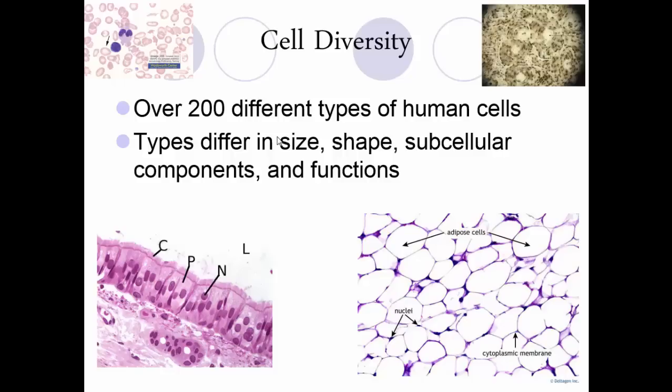Even among blood cells they're very different — the two purple cells look different from each other because they have different jobs. On the bottom left we have pseudostratified ciliated columnar epithelial cells — cells that have cilia on the outside, which are little hairs. They are pseudostratified, meaning they look like they're in layers; columnar, meaning column- or rectangular-shaped; and epithelial, meaning lining tissue. On the bottom right are adipose cells, which are fat cells — the nuclei are pushed to the side and most of the cell contains fat. On the top right are bone cells, which are ring-like in structure and look very different from other cells.